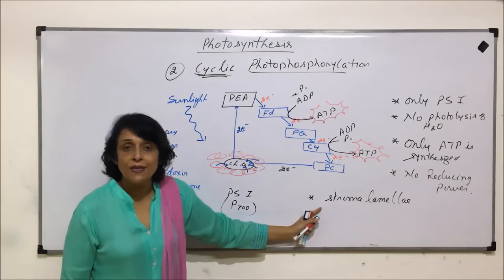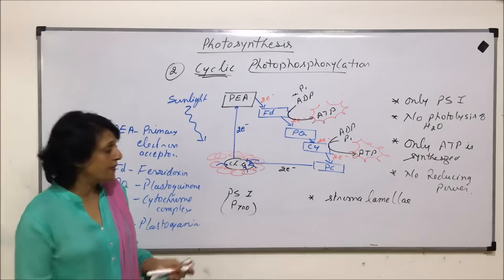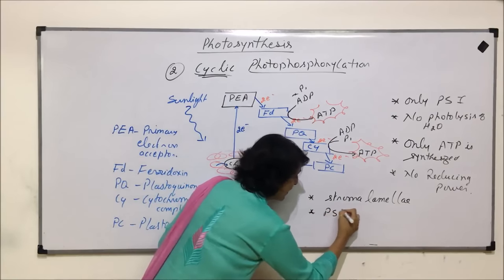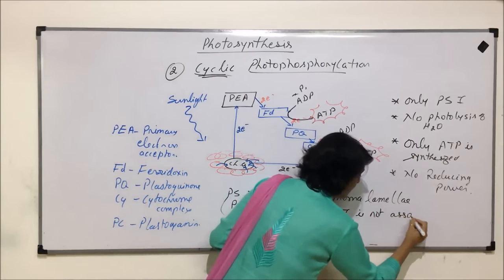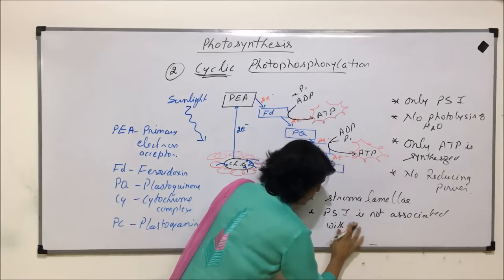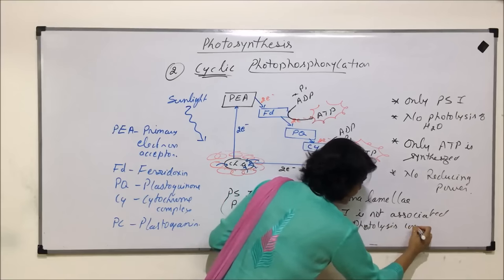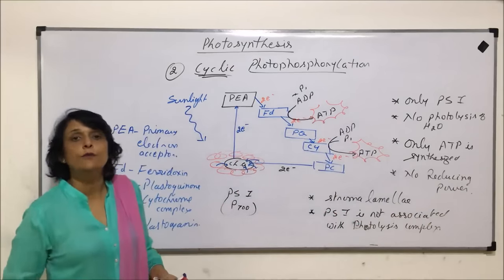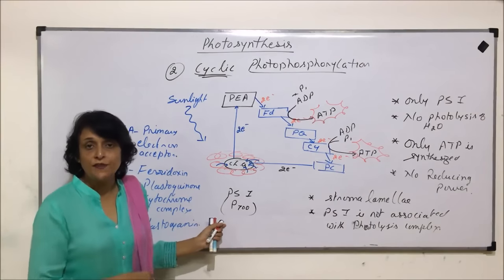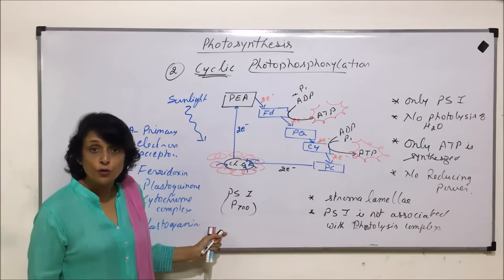In case of stromalamellae, it is only PS1 which is present. And PS1 is not associated with the water dissociation complex. So, PS1 is not associated with photolysis complex. That means, the complex which is going to help in photolysis is not associated with PS1. If you are able to recall, the previous pathway which we talked of, that is non-cyclic, it started with PS2. And PS2 was associated with photolysis complex.